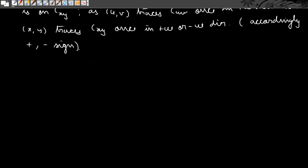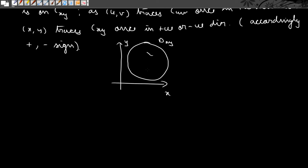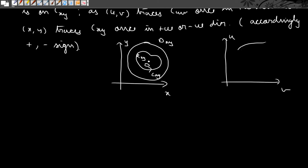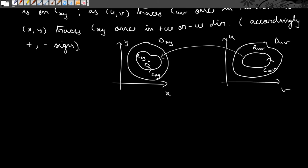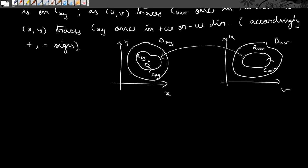Let us represent these things diagrammatically. In the xy plane we have our circular domain D_xy, and inside it the region R_xy bounded by the curve C_xy, with O as the center of D_xy. Similarly, in the uv plane we have the domain D_uv, and inside it the region R_uv with the curve C_uv. As the points traverse C_uv anti-clockwise, correspondingly the points on C_xy traverse either anti-clockwise or clockwise.